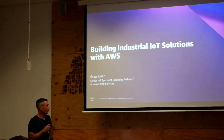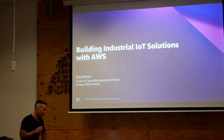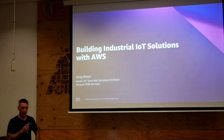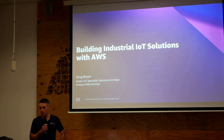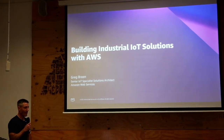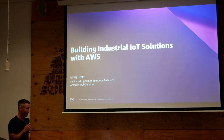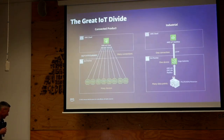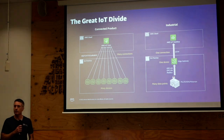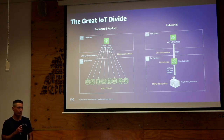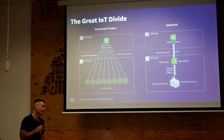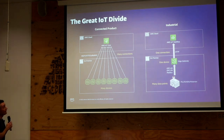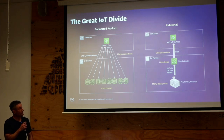My name's Greg Breen. I'm an IoT Specialist Solutions Architect with AWS. I'm not under any illusion that you're here to see me — I'm just the warm-up act, and we'll be bringing out the rock star in due course. So I'm going to take you through an introduction to industrial IoT solutions on AWS, covering some of the services you'd use to build a solution and how they fit together. But before I dive in, I want to get some definition around what an industrial IoT workload is.